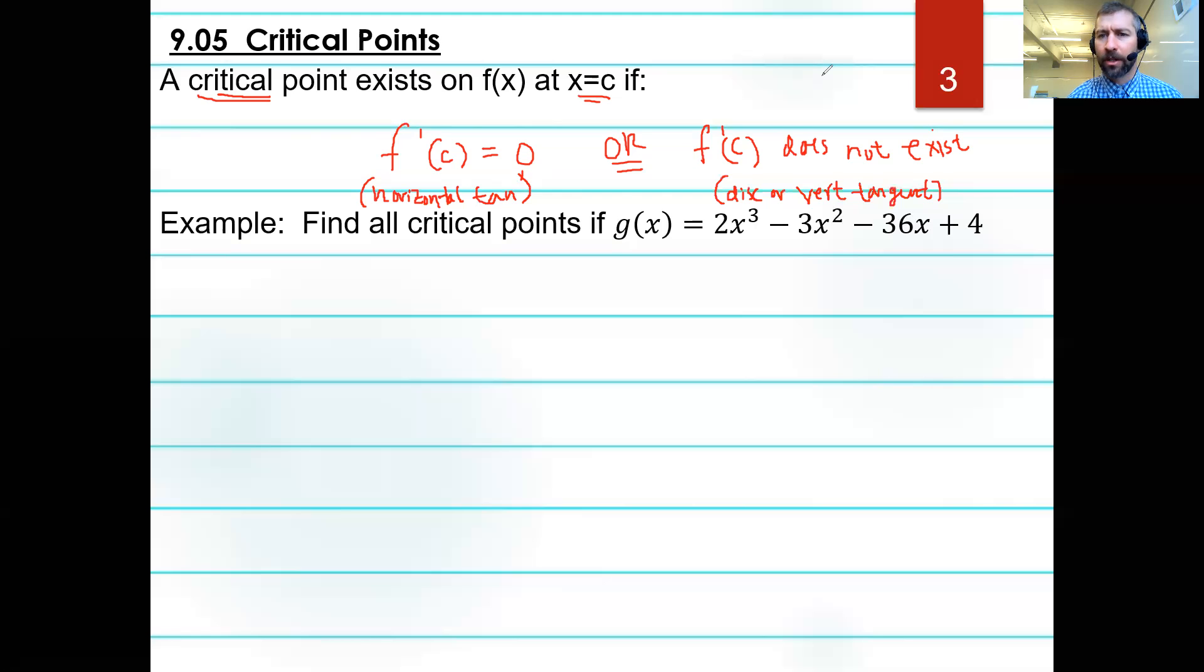So let's look at an example of when we'd actually, what we'd actually have to do. So we're going to find the critical points of this function g(x). And here's this function. It's a crazy cubic function. 2x³ - 3x² - 36x + 4. Well, if I want to find the critical points, let's look for the definition. That's going to be when f'(x) equals 0 or when f' doesn't exist.